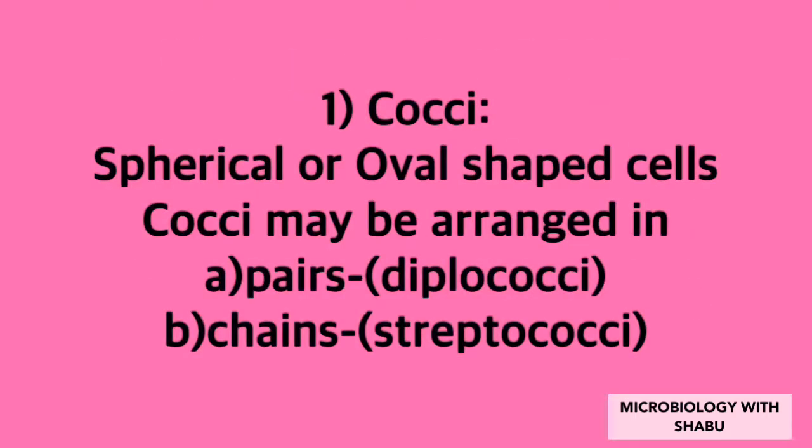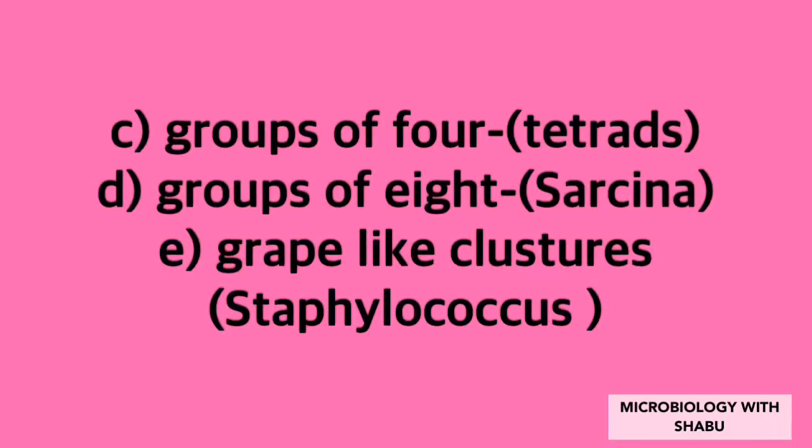One: cocci — spherical or oval-shaped cells. Cocci may be arranged as: (a) pairs — diplococci, (b) chains — streptococci, (c) groups of four — tetrads, (d) groups of eight — sarcina, (e) grape-like clusters — staphylococci.